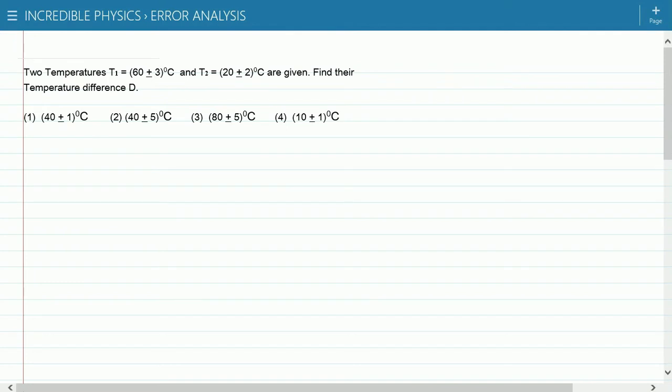Now we have to see this numerical which is based on the error subtraction of two quantities. In this numerical, we are given two temperatures T1 which is 60 plus minus 3 degree Celsius and T2 equal to 20 plus minus 2 degree Celsius.